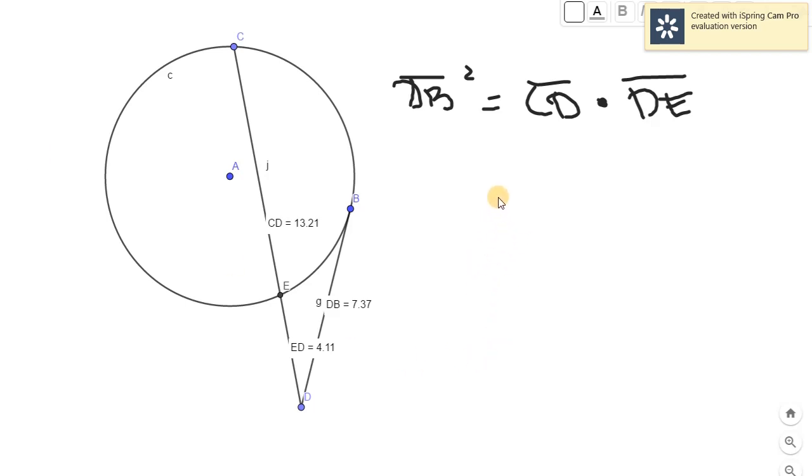So what do we need to do? We need to substitute. By substitution, we will have 7.37 squared equals the entire secant 13.21 times 4.11, which is the external part of the secant. Solving using our calculators, 7.37 squared equals 54.32. And 13.21 times 4.11, the answer is 54.29.